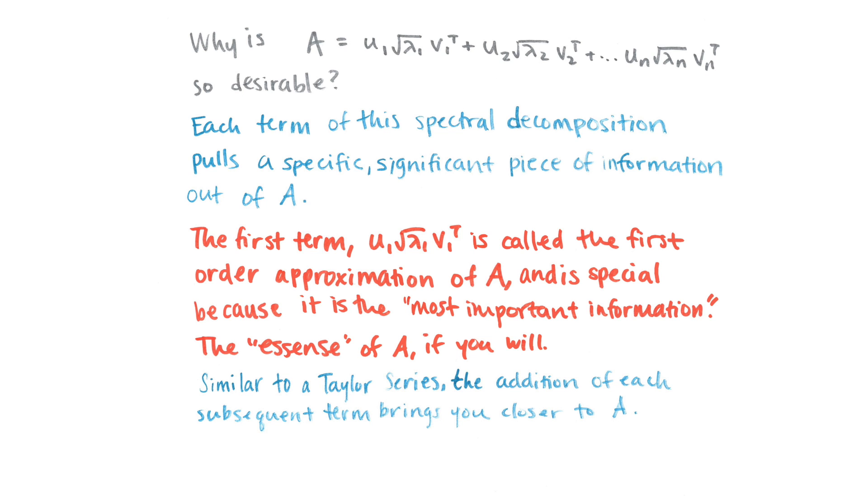So why is this so desirable? Why do we want this big messy decomposition? It seems kind of complicated. Well, each term pulls a specific really important piece of information out of A. So the first term, u sub 1, singular value 1, v1 transpose, is called the first order approximation of A. It's really special because it's like the most important information. It's the essence of A. It's a pretty rough estimate, but it represents A in some really important ways. And depending on your application, you want that first term to tell you something special about your matrix A. And like a Taylor series, each time you add a term onto that first term, it gets a little bit closer to the actual A.